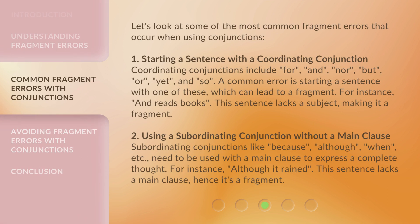Let's look at some of the most common fragment errors that occur when using conjunctions. 1. Starting a sentence with a coordinating conjunction. Coordinating conjunctions include: For, And, Nor, But, Or, Yet, and So. A common error is starting a sentence with one of these, which can lead to a fragment. For instance, 'And reads books.' This sentence lacks a subject, making it a fragment.